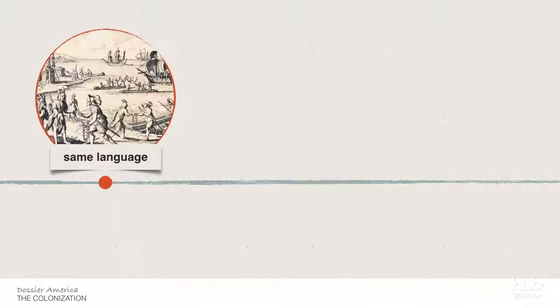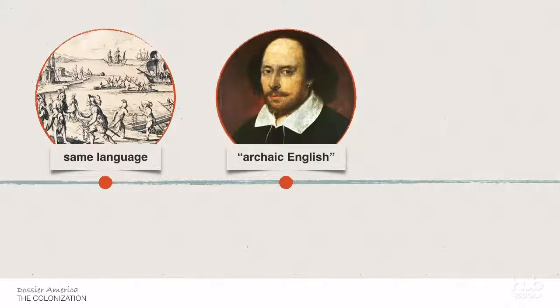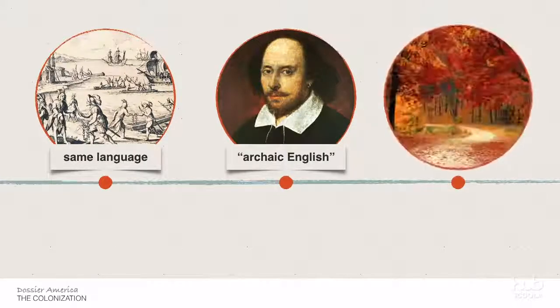While the American colonies and England used the same language, there were some differences in accents, set phrases, and syntax. Degrees of variation always occur when a language travels through time or from one place to another. The English that settlers brought to America is referred to as archaic English, as it comes from the time of Shakespeare. Certain features of this style remain, such as the use of the word 'fall.'